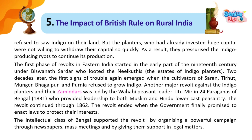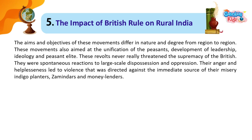The revolt continued through 1862. The revolt ended when the government finally promised to enact laws to protect the peasants' interests. The intellectual class of Bengal supported the revolt by organizing a powerful campaign through newspapers, mass meetings and by giving them support in legal matters. The aims and objectives of these movements differed in nature and degree from region to region. These movements also aimed at the unification of the peasants, development of leadership, ideology and peasant elite. These revolts never really threatened the supremacy of the British — they were spontaneous reactions to large-scale dispossession and oppression, directed against the immediate sources of misery: indigo planters, zamindars and moneylenders.